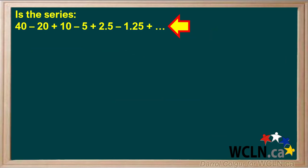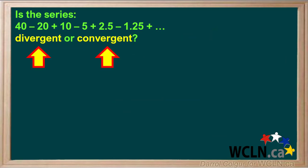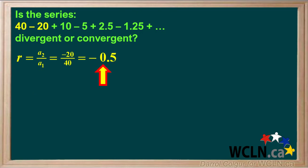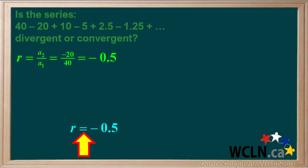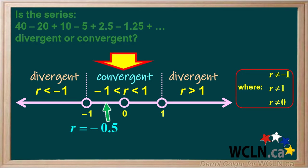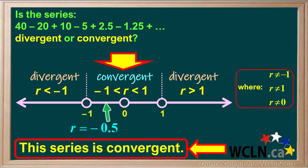For example, we're given this series and asked if it's divergent or convergent. To answer this, we'll calculate the value of the common ratio R, which is A2 over A1, or negative 20 over 40, which is negative 0.5. Now we know that R equals negative 0.5; we can see which range it fits into in our diagram. Negative 0.5 is between negative 1 and 0, which is in the convergent range. So we can state that this series is convergent.